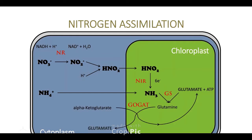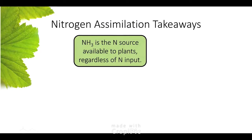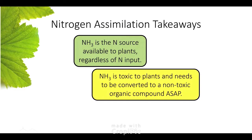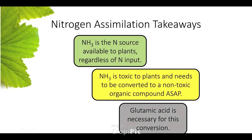The plant has ways where it can cycle the glutamic acid to the cytoplasm and then back into the chloroplast if it needs it. There are always these ways that enzymes a plant can use and produce to allow the plant to get the amino acid where it needs to be, but it has to be there. Takeaway: ammonia is the end source available to the plant regardless of what input you use — nitrate, ammonium, or urea — it all turns into ammonia in the chloroplast. Ammonia is toxic, we have to put a carbon to it as soon as possible, and glutamic acid is necessary for this conversion.